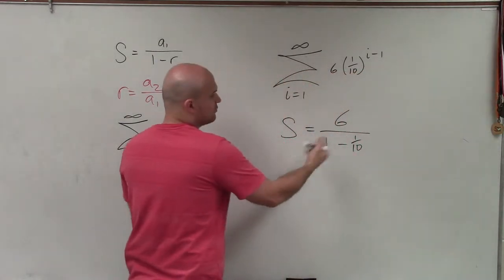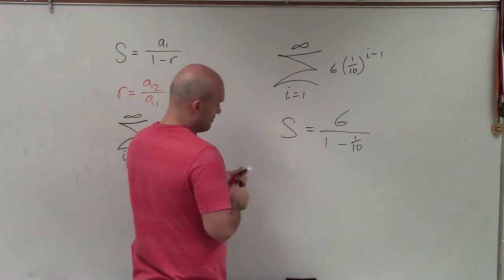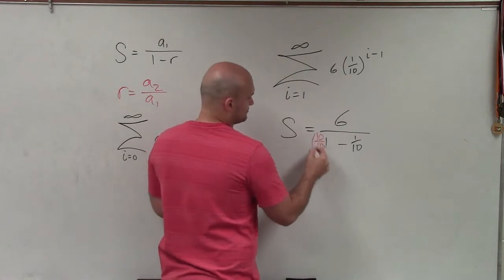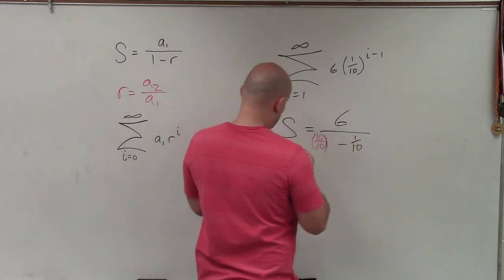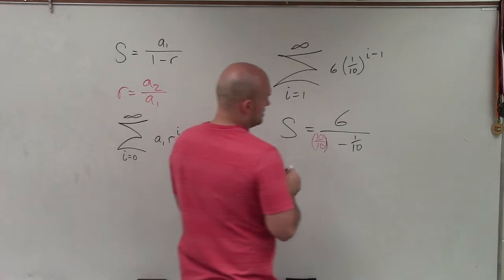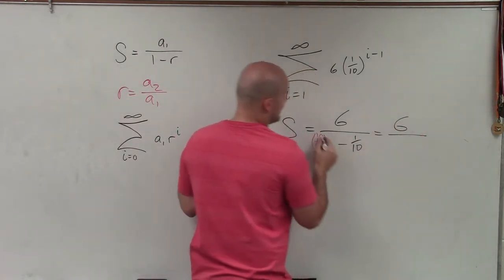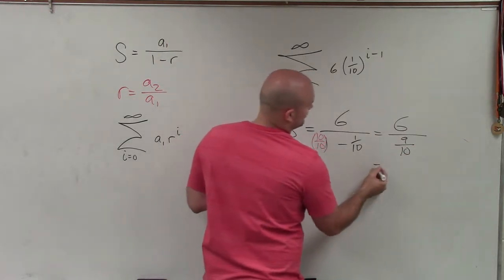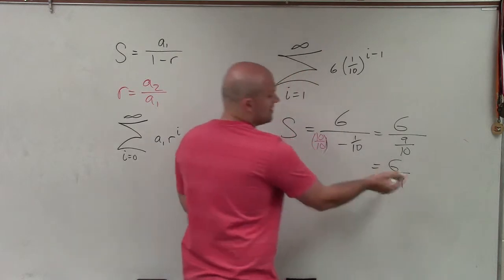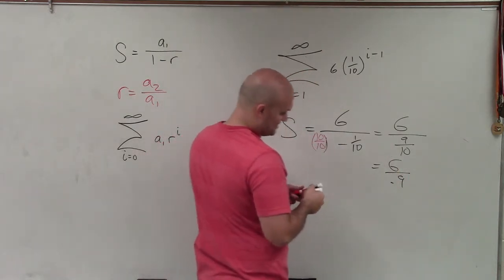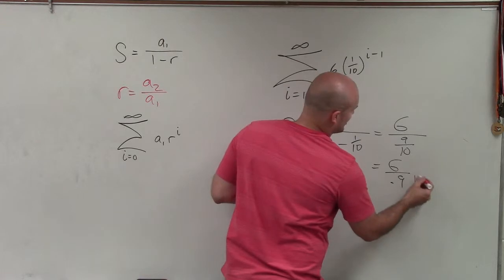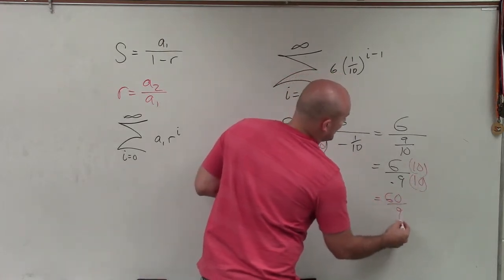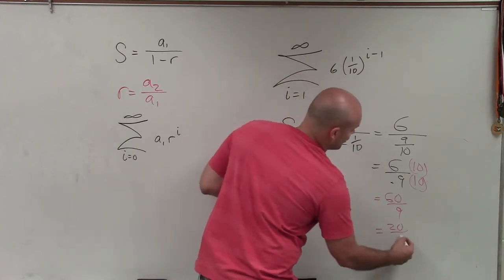So to subtract 1 from 1 tenth, what I like to do is rewrite 1 as 10 over 10, so they have the same denominator. So therefore, when I solve that across, I get 6 in my numerator divided by 10 over 10. So 10 minus 1 is 9 over 10. That's going to equal 6 divided by 0.9. Then to write this back over as a fraction, I can multiply by 10 over 10 again. Therefore, what I get is 60 over 9, which we can reduce to a fraction of 20 over 3.